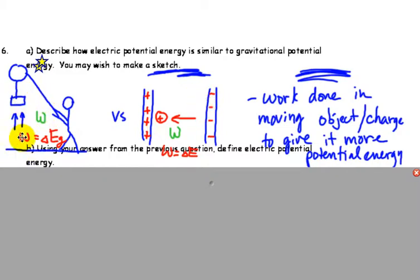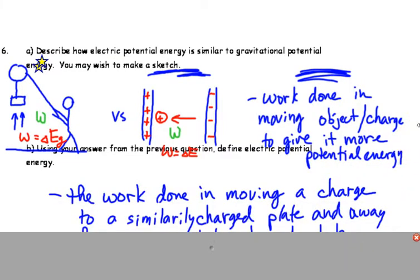Just like this box would naturally want to go down and hit the ground. So, going against what it would naturally do is giving work, is applying work to it, which results in a gain in energy. So, work done in moving an object or charge to give it more potential energy.